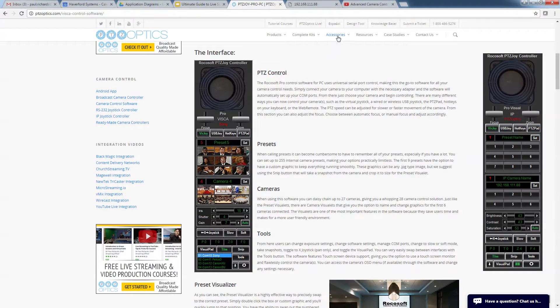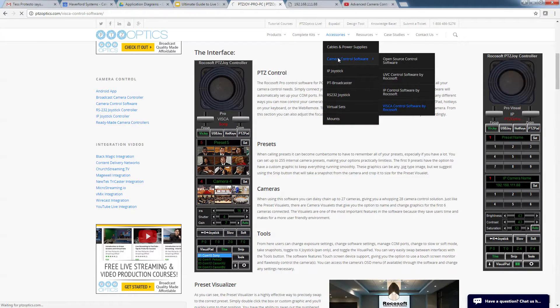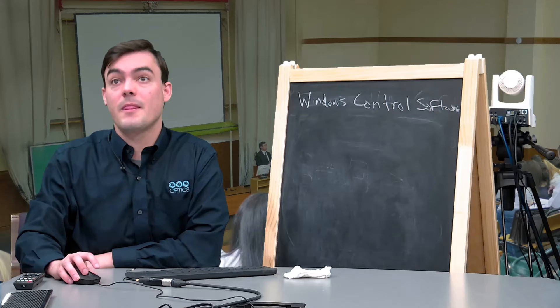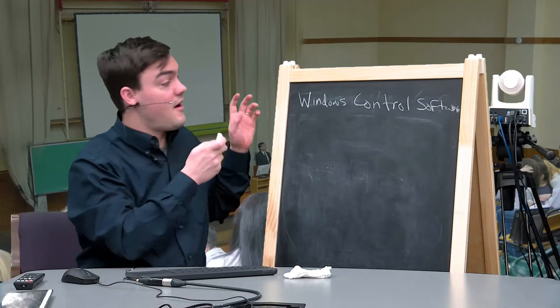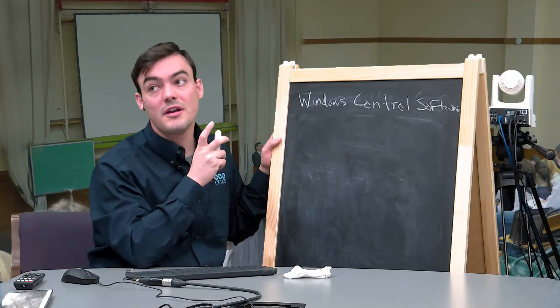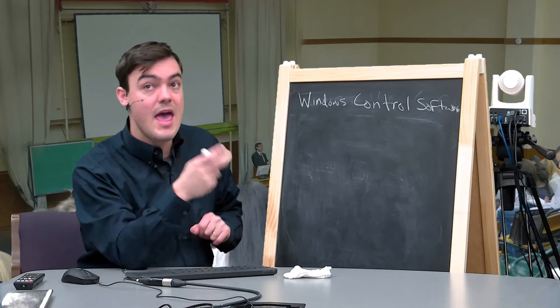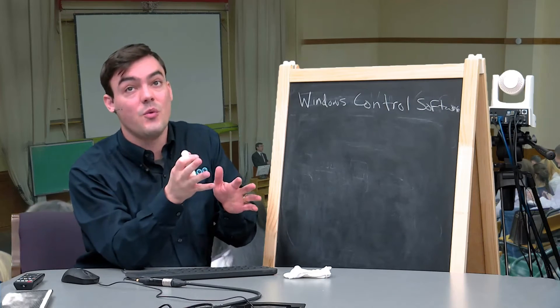So first of all let's take a look at where you can find it on our website. Here's the control software here. There are seven different options for this control software. Let's just briefly get that out of the way. Basically of the seven softwares what you really need to figure out is whether you want pro or studio and which interface you want to use.